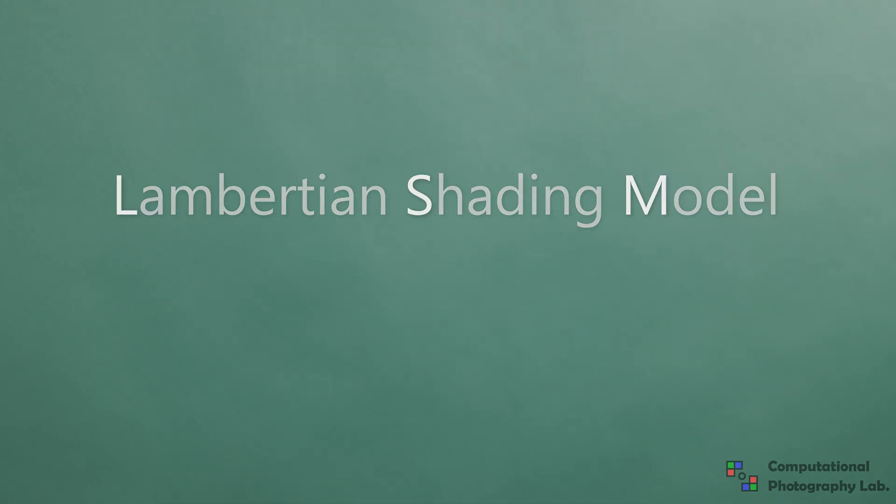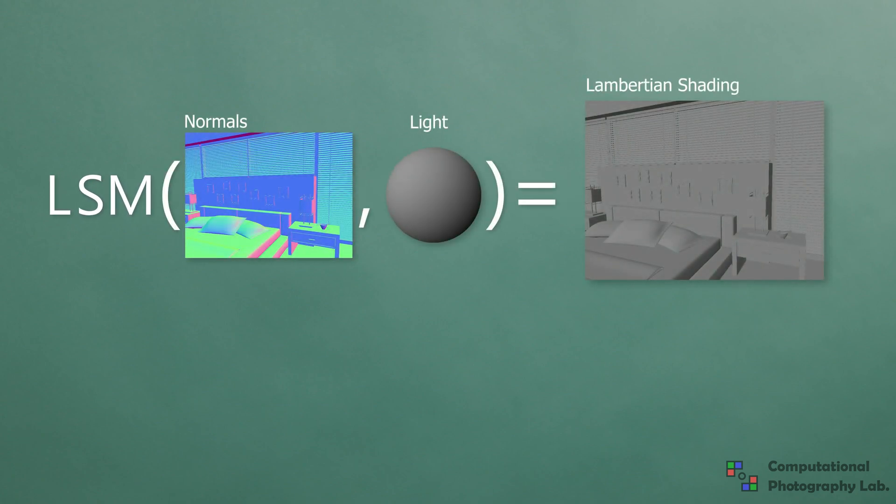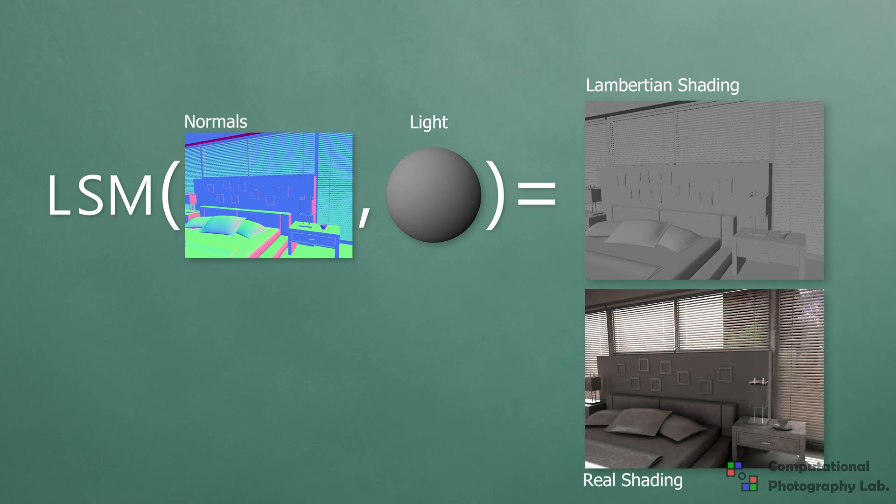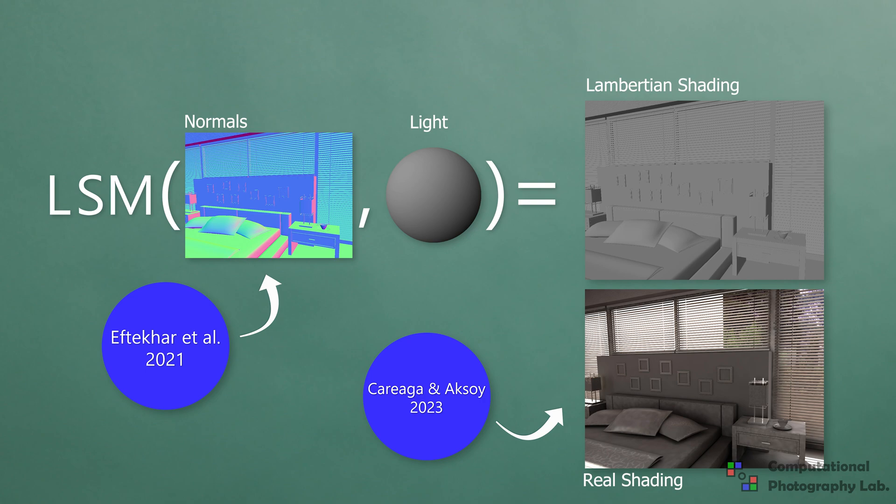The Lambertian shading model directly relates shading with surface orientation in a direction of the light source. This simple model is not expressive enough to represent all lighting effects in a scene. However, it makes it very convenient to approach this problem, as we can estimate two of these unknown variables, surface orientation and shading, using dedicated computer vision models.